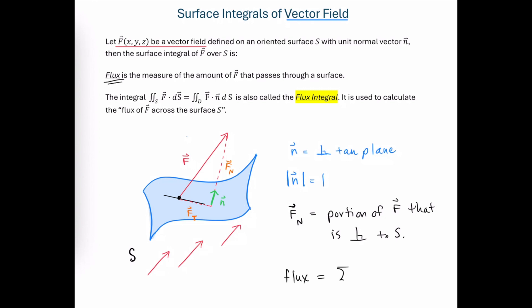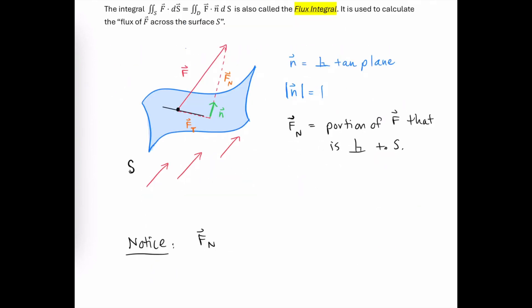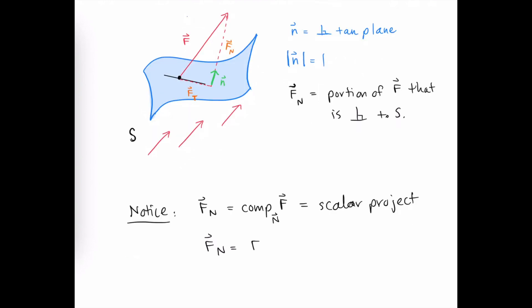The flux is going to be determined by adding up all of those normal components over the entire surface. The normal component of this force vector is the same thing as the scalar projection of F onto n, which is calculated by F dot n over the magnitude of n. Since the magnitude of n is one, that normal component is simply F dot n.